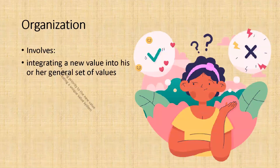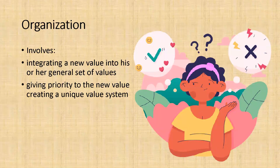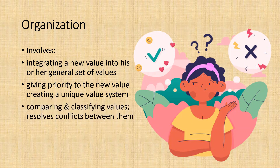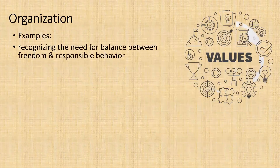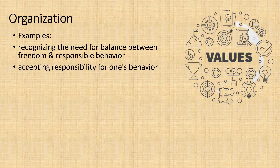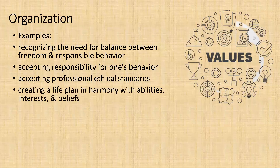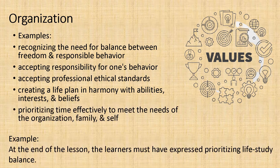Organization involves integrating the new value into one's general value system, giving priority to the new value, and comparing and classifying values while resolving conflicts between them. Examples include recognizing the need for balance between freedom and responsible behavior, accepting responsibility for one's behavior, accepting professional ethical standards, creating a life plan in harmony with one's abilities, interests, and beliefs, and prioritizing time effectively to meet the needs of the organization, family, and self.